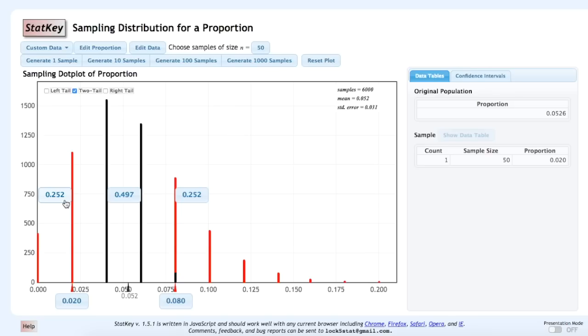So, given that the population proportion should be 0.0526, we could also say if the wheel was fair, the probability that we would take a random sample of 50 spins of the wheel and find a proportion more extreme than 0.02 is the red area here, the total area 0.504.